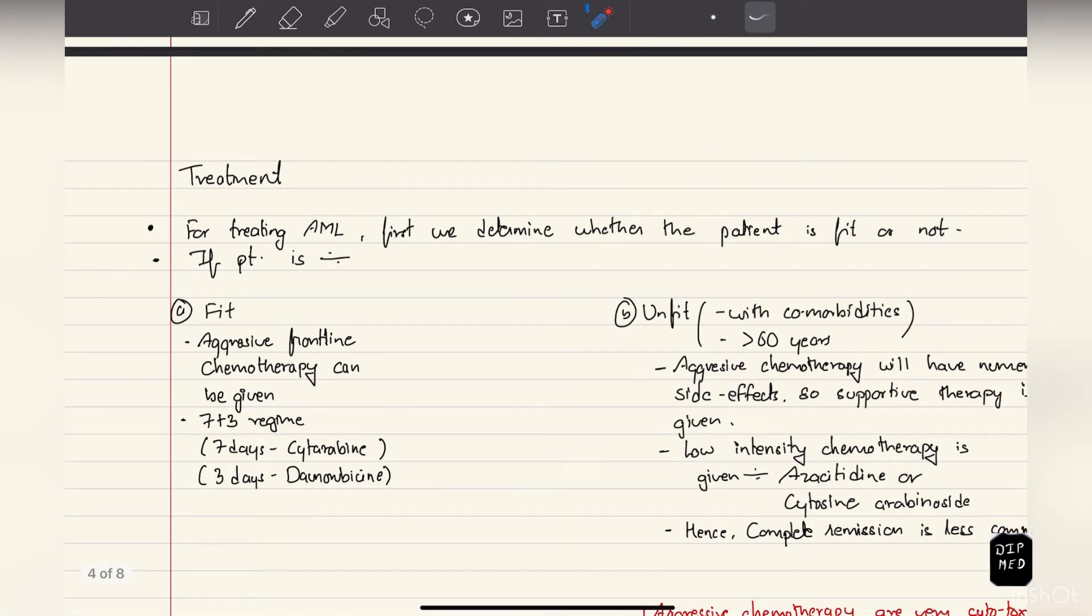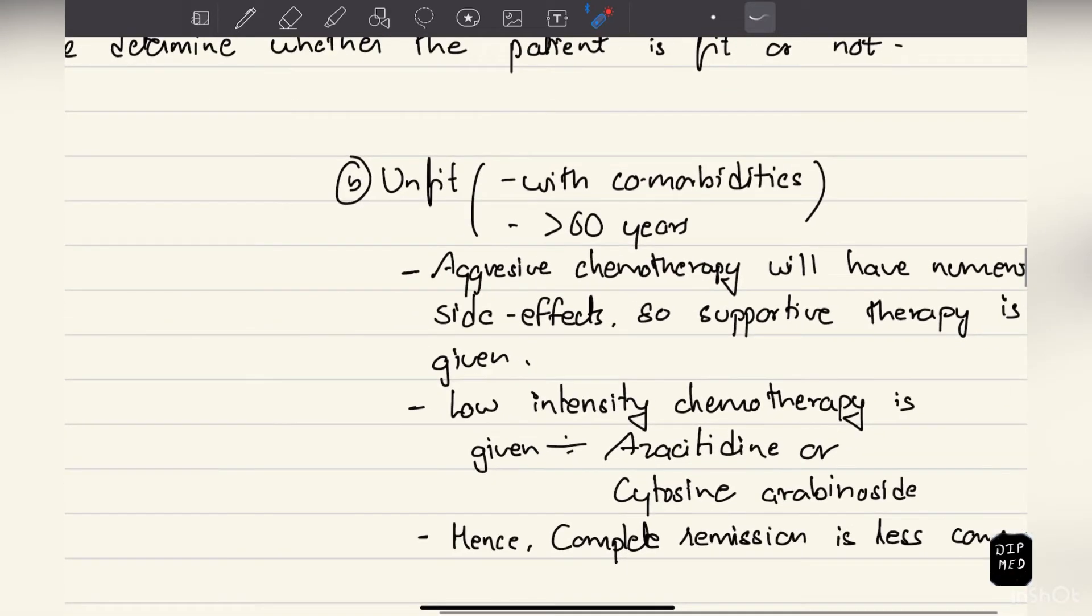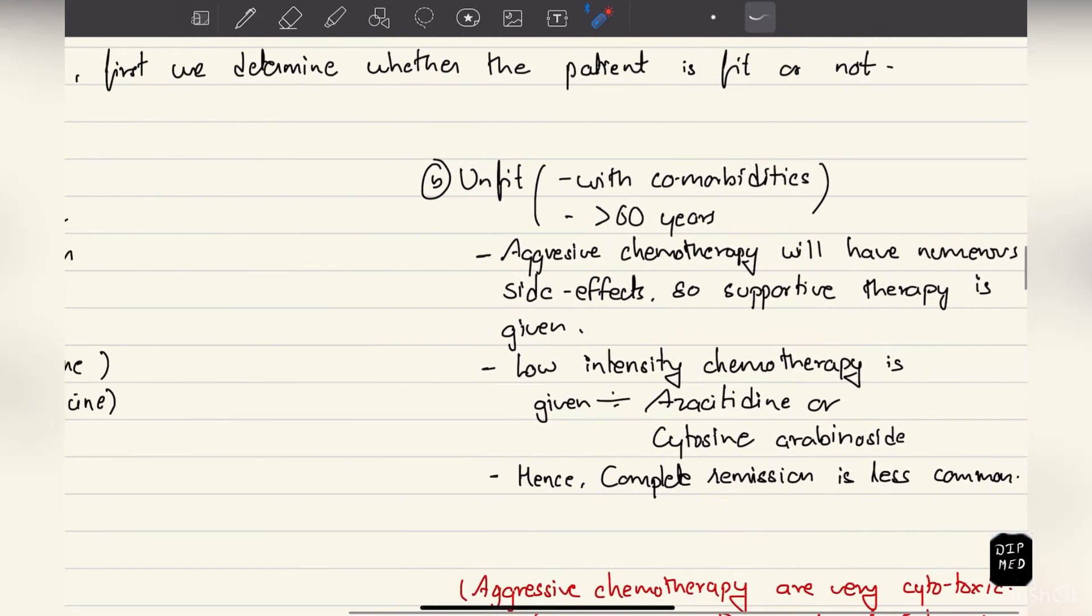Finally coming on to the treatment of AML: before starting treatment, first we divide patients into fit and unfit. Unfit patients are those with comorbidities and above 60 years of age, or those who are elderly. In this type of patients, if we give aggressive chemotherapy this will have numerous side effects and can prove fatal. So supportive therapy is given along with low-intensity chemotherapy, which includes azacitidine or cytosine arabinoside. Since we use low-intensity chemotherapy, complete remission is less common; however, partial remission can occur.